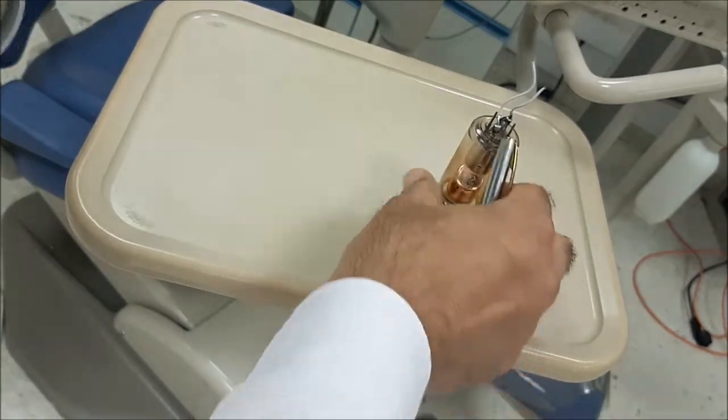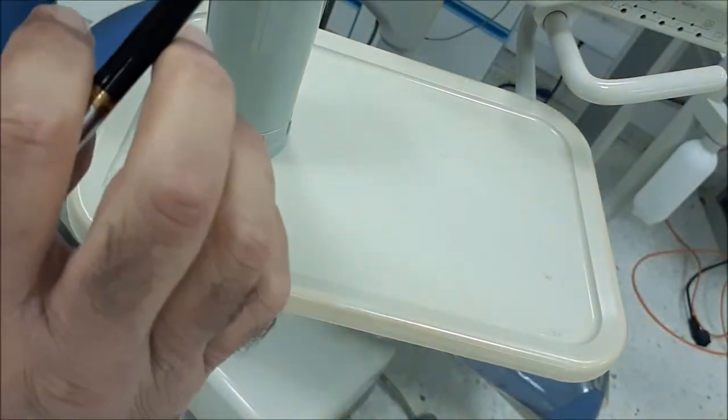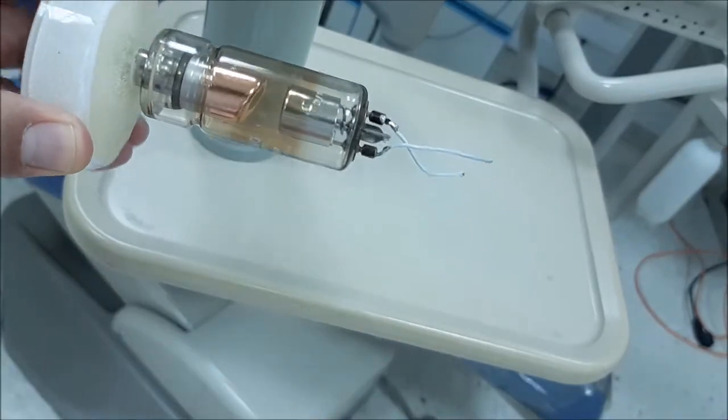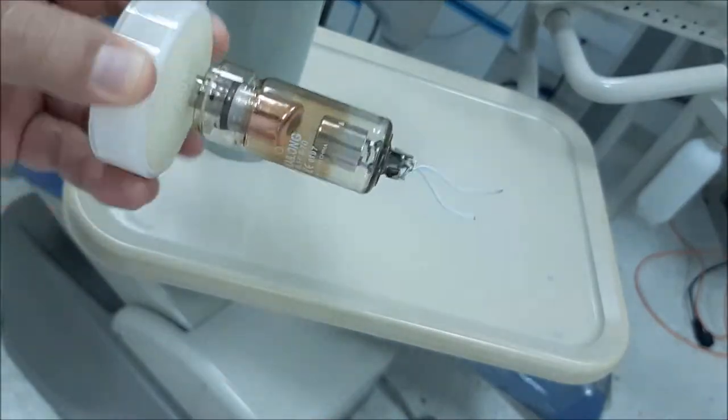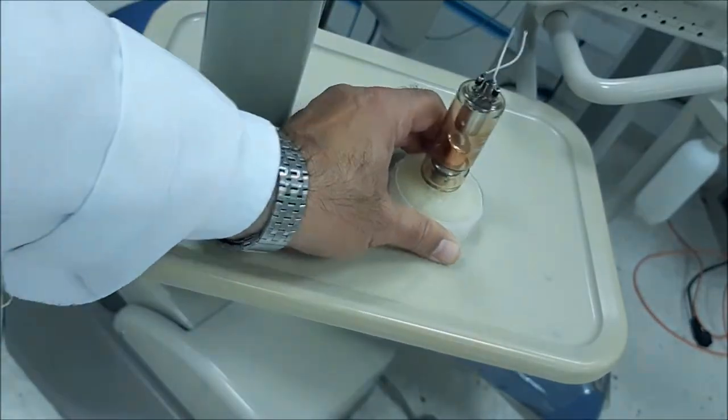When the x-ray is generated, it will be directed relatively through one area by the angulation of the anode, and it will be emitted through the window.